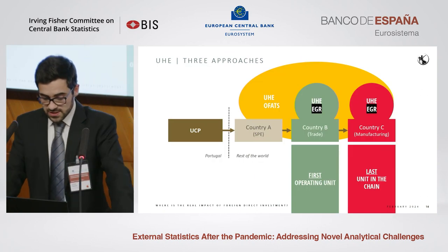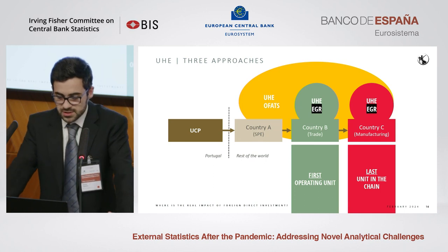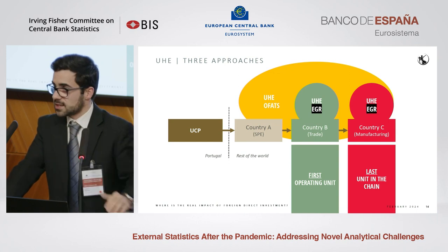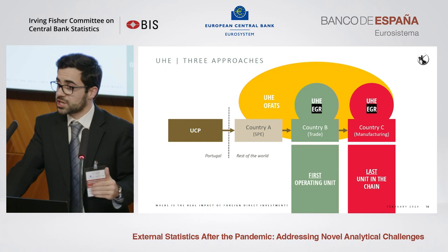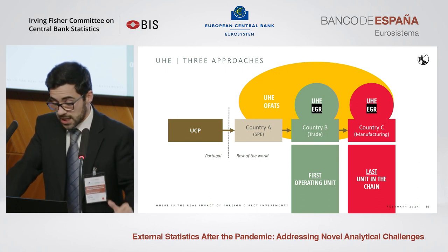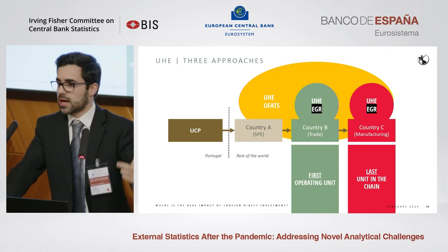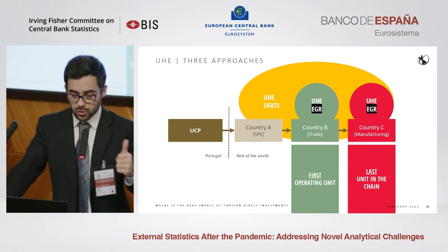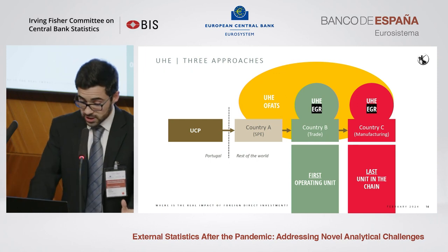To summarize the results in a simple example: using the OFATS approach we consider countries A, B, and C as ultimate host economies. Moving to the first operating unit approach, we consider country B as the ultimate host. Using the last unit in investment chain approach, we have country C. We will have different allocations both geographically and in terms of economic activity.